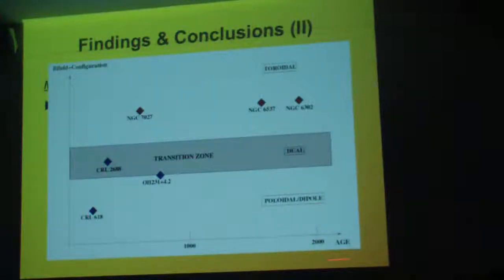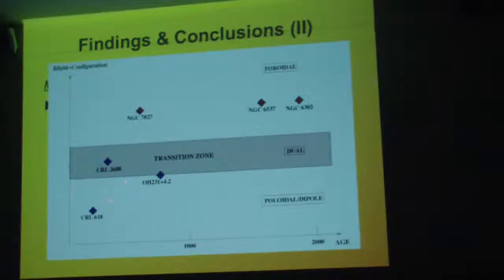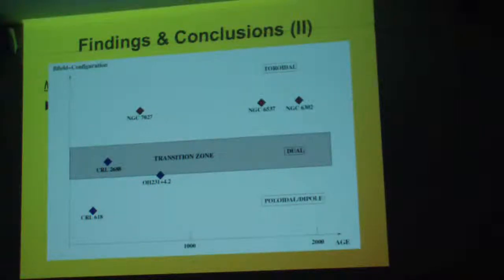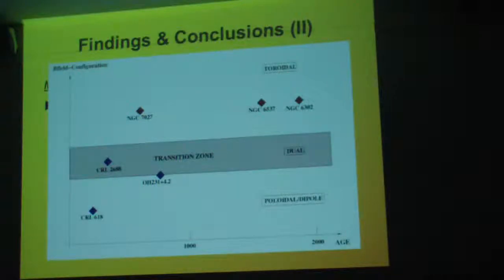All those objects: the young ones — the protoplanetary nebulae — tend to show a polar configuration. CRL 2688 and maybe OH 231.8 show a dual configuration — both a toroidal and a poloidal field. And all our planetary nebulae only show a toroidal magnetic field. So you have a change of configuration while the nebulae are evolving.